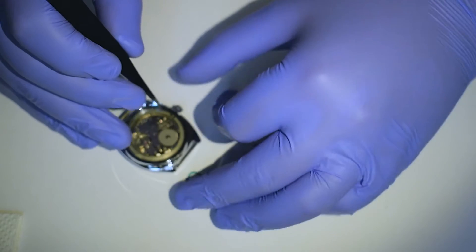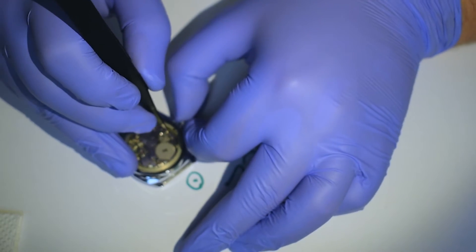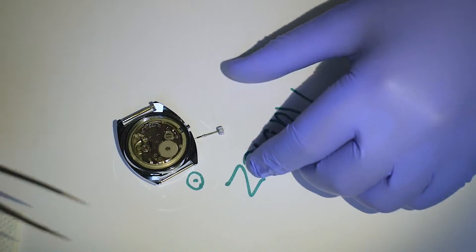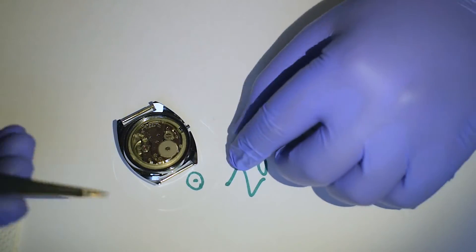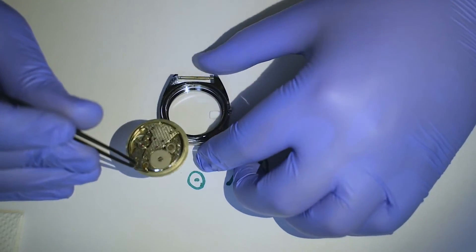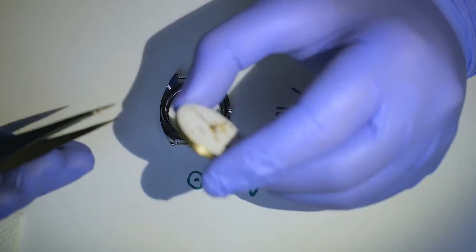So the first thing that you need to do is to remove the crown and the stem. So now if you have the crown outside, you can simply just remove the movement and the dial from the watch.